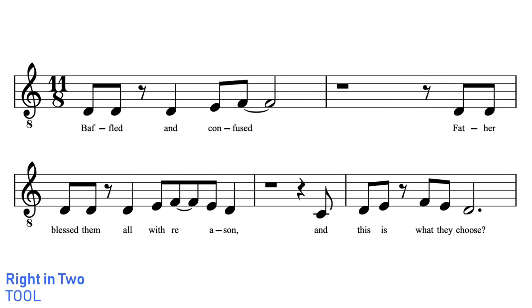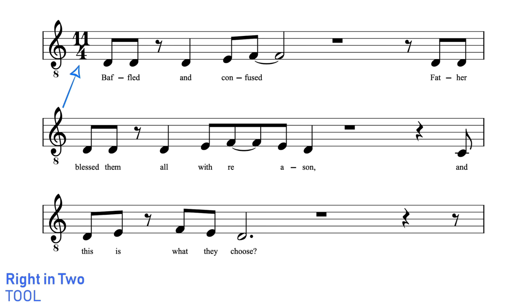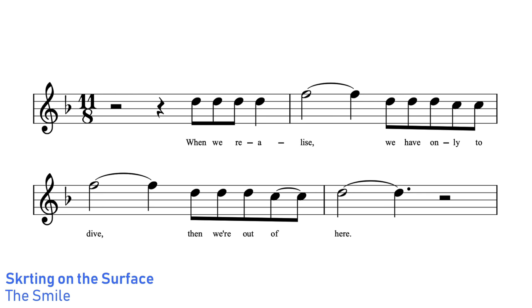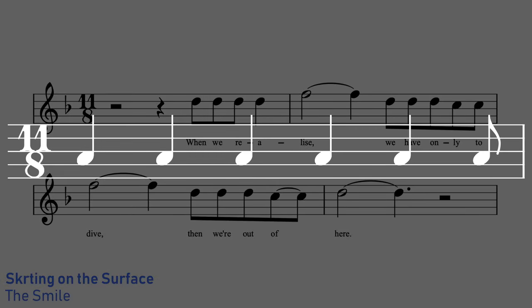I would be inclined to call Write In 2 an example of 11/4 time, not 11/8. So what is the difference between 11/4 and 11/8? Well, really any song in 11/8 time could be notated or conceptualised in 11/4 and vice versa. The biggest factor in choosing one over the other is the tempo. Skirting on the Surface by The Smile is fast enough that it's better notated in 11/8. A way to judge whether a song is fast enough to be 11/8 rather than 11/4 is whether you naturally wind up counting 5 and a half beats in the bar rather than 11 — in other words, you're naturally latching onto a quarter note pulse, but because there's only 11 eighth notes in the bar, you wind up counting 5 and a half quarter notes.